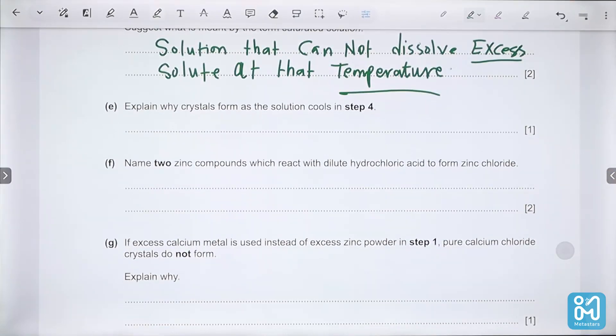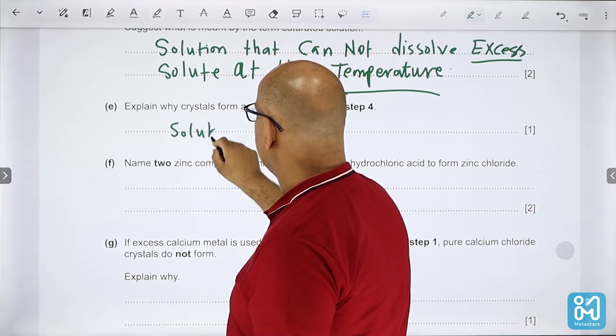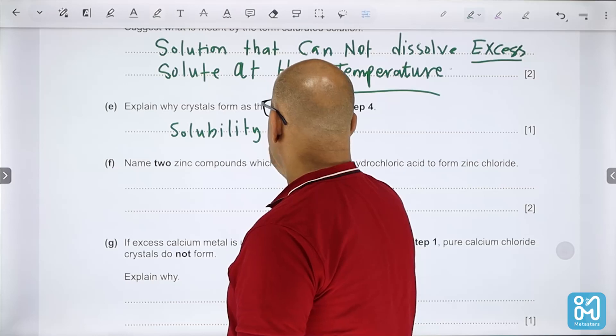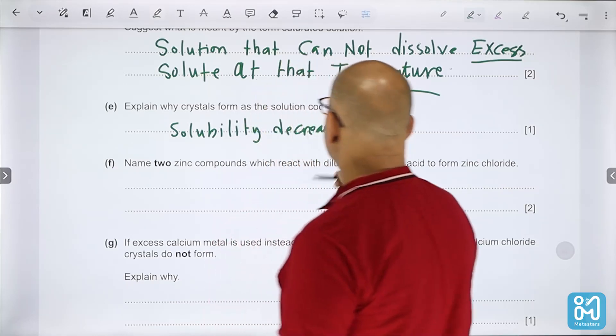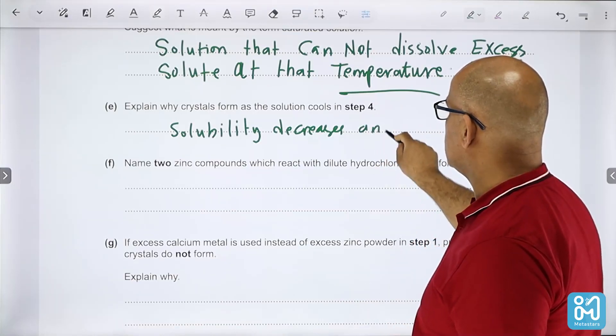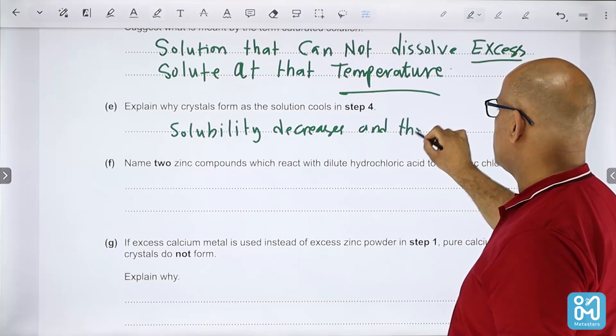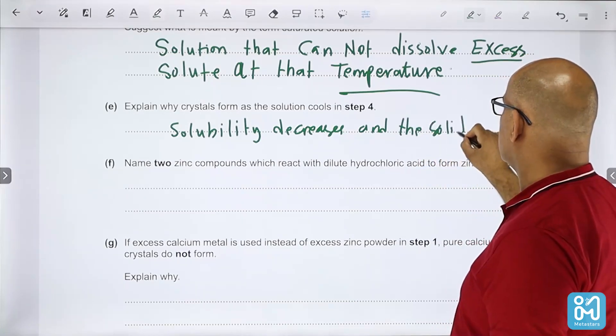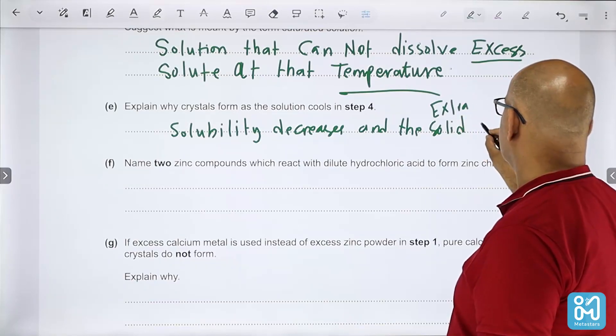Explain why the crystals form as the solution cools in step four. Since the solubility decreases, there is a formation and the solid appears and the extra solid crystallizes.